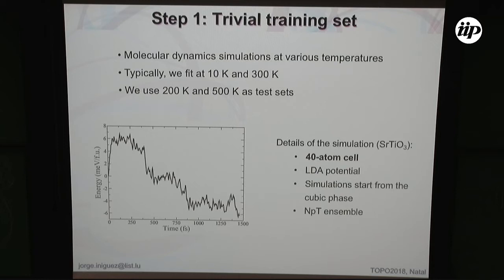How do we fit this new model with all atoms? The procedure is very straightforward. We run an ab initio molecular dynamics simulation on a relatively small cell. For strontium titanate, we take a two-by-two-by-two unit cell periodically repeated — 40 atoms — starting in the cubic phase and letting the system evolve at 10 kelvin using a thermostat standard in first-principles simulations. The system typically heats up quickly and eventually goes to lower energy configurations.